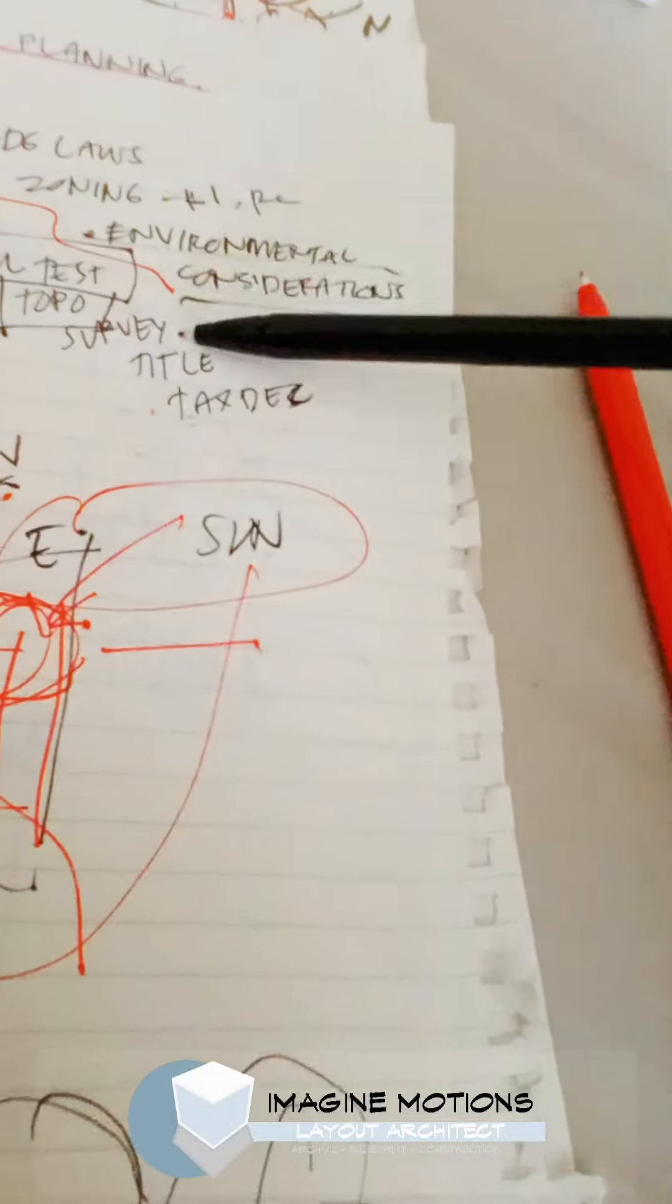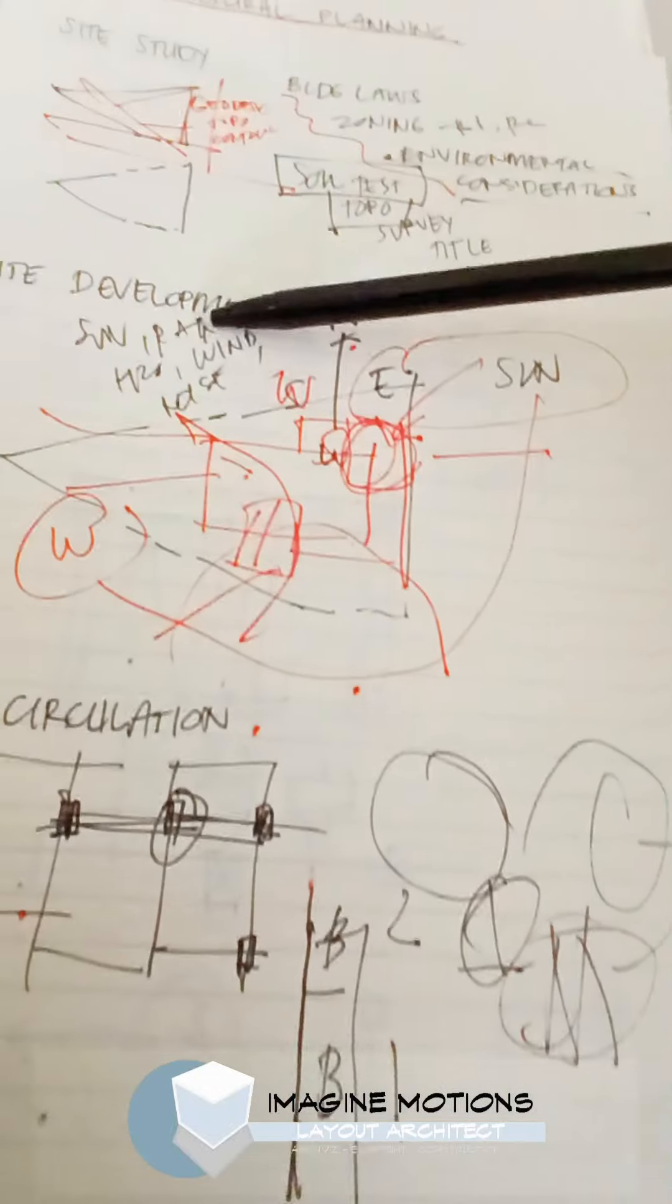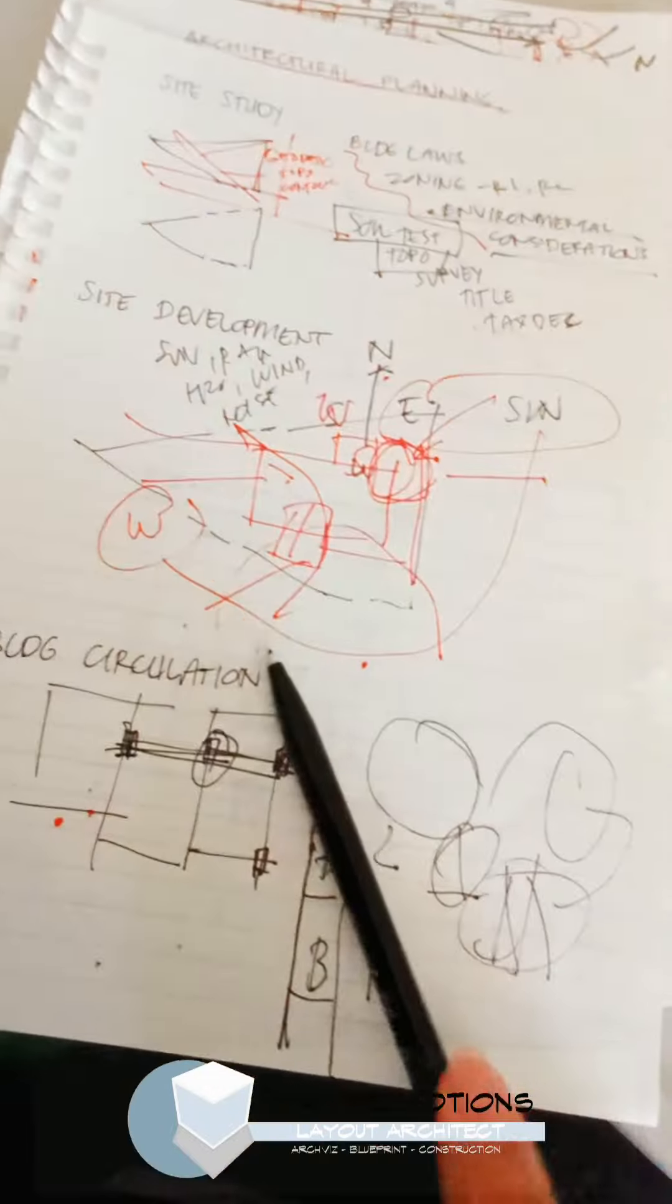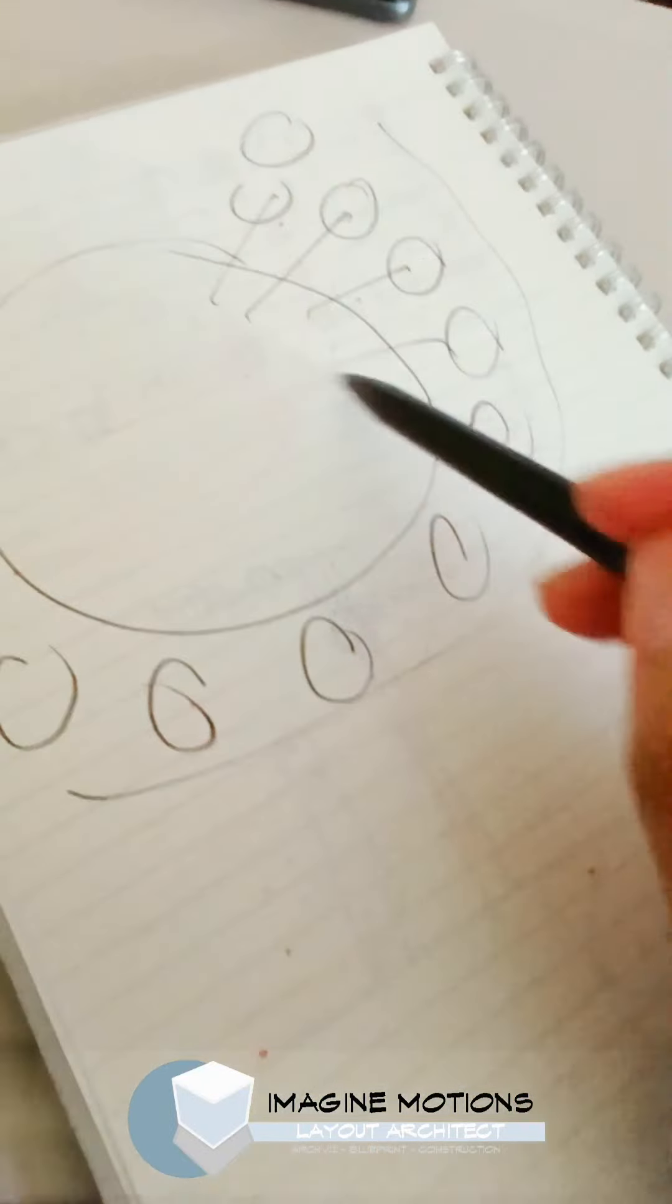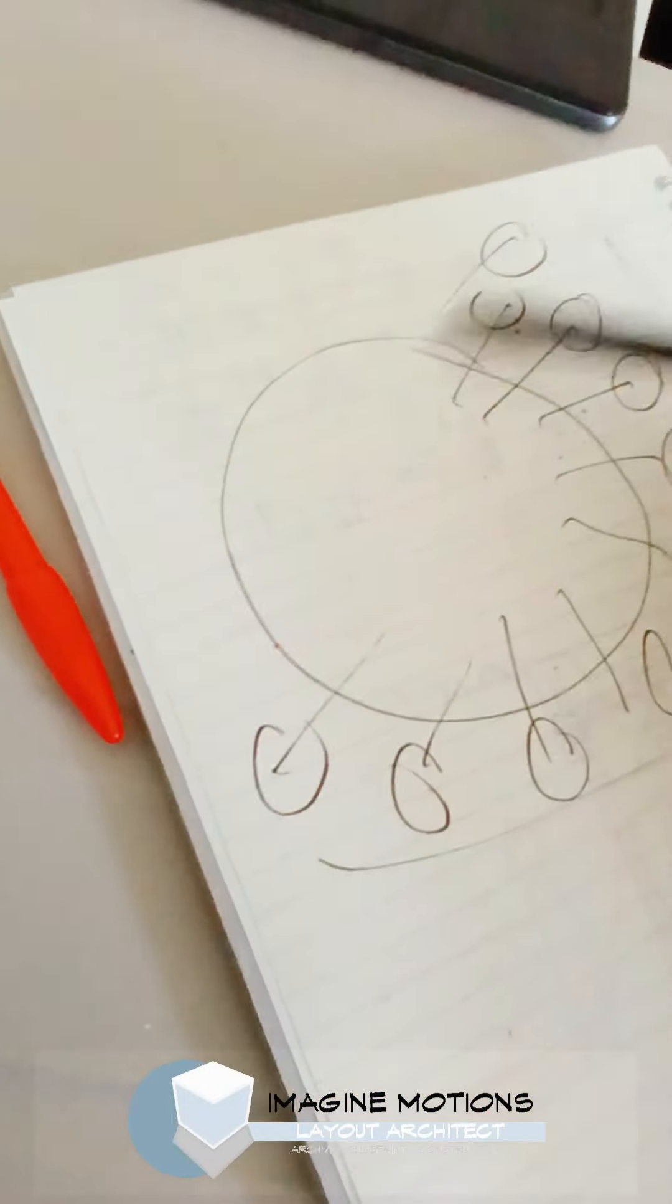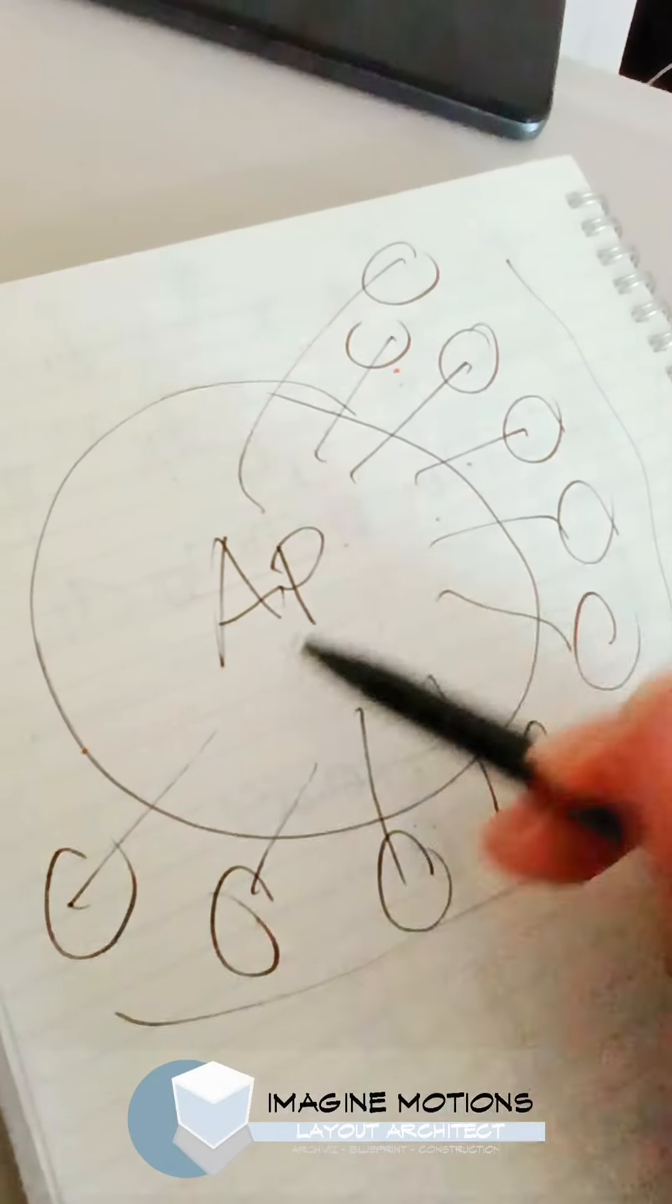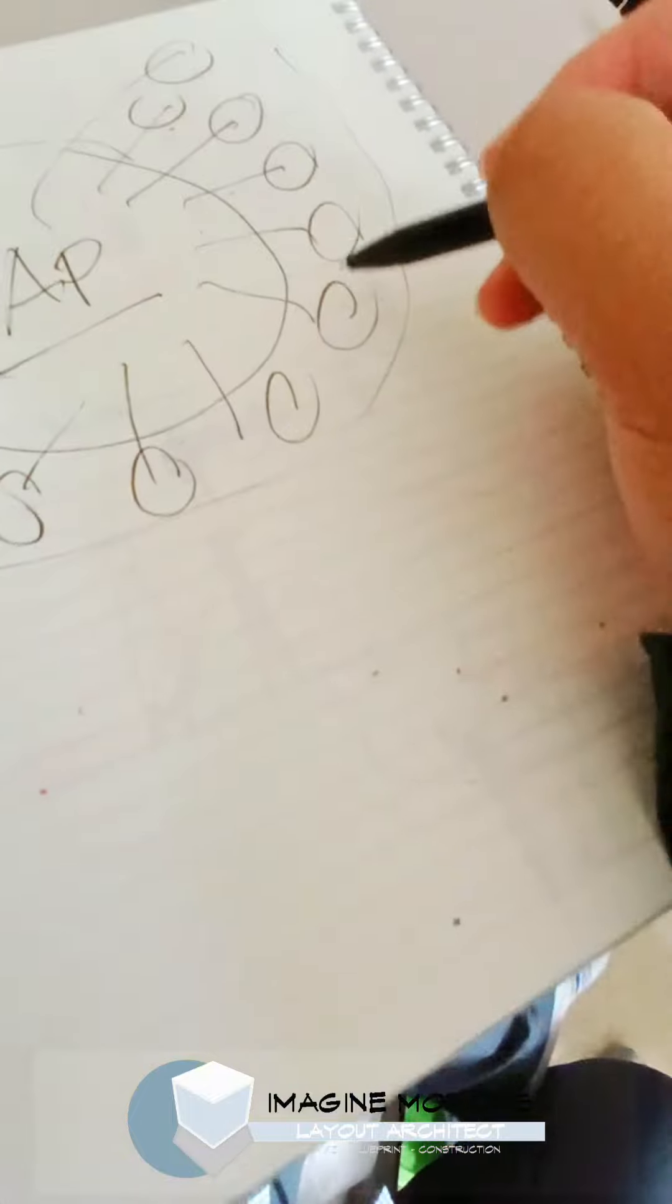So all of these, soil test, topo-survey, site development, environmental, and circulation, all these aspects, even interior design, are placed into the big picture, which is the architectural program or plan. These are specializations.